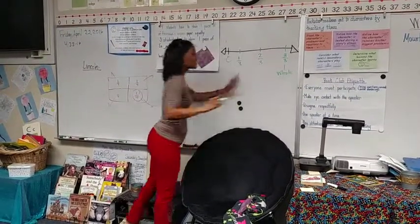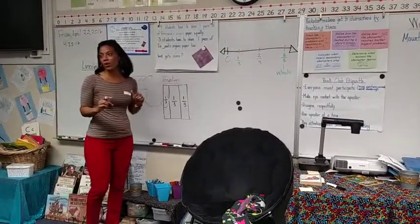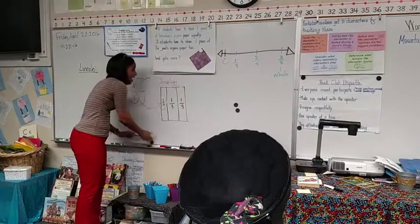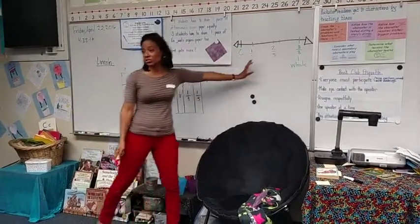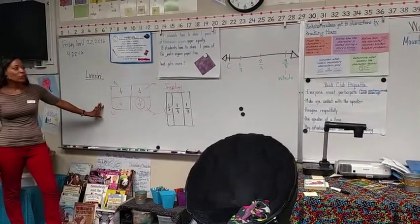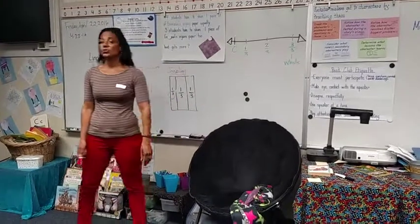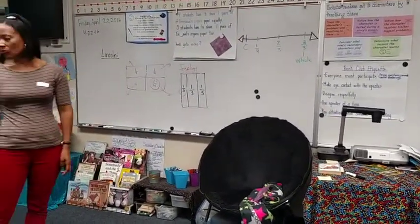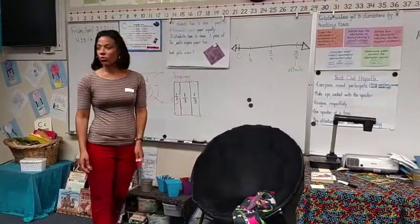Now let's compare these on a number line — we did it with a picture. Now let's do the one-fourth on top. Let me try a different color — red. If we were going to divide this into four equal parts, what fraction would come first? Stop and think. Tell a partner. One-fourth.